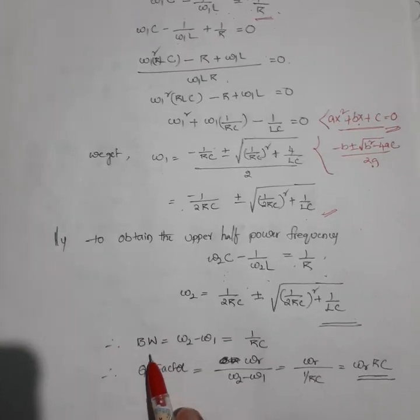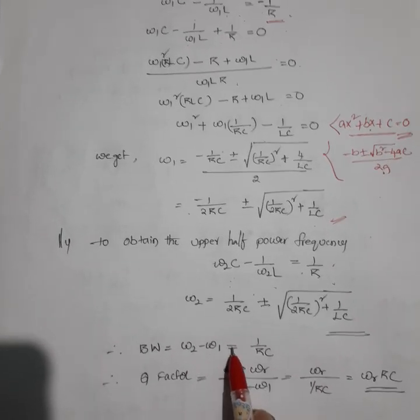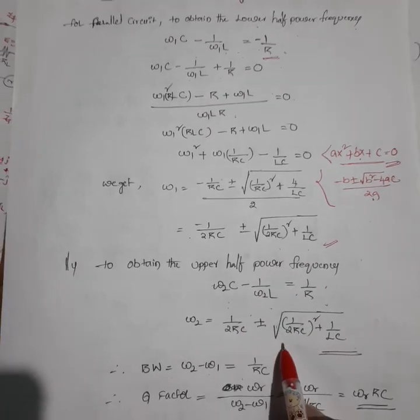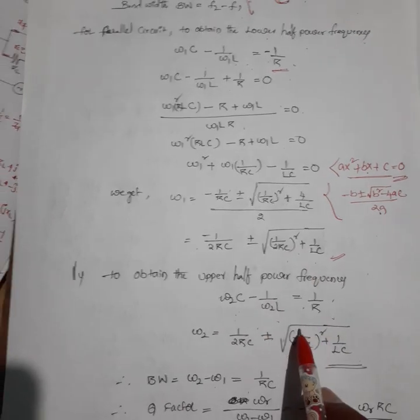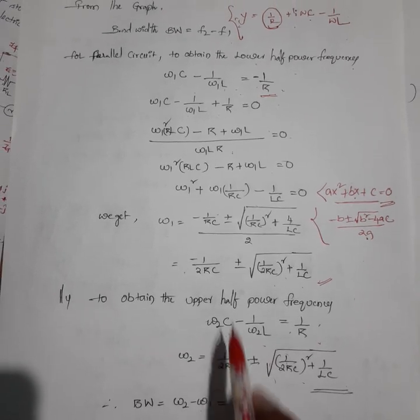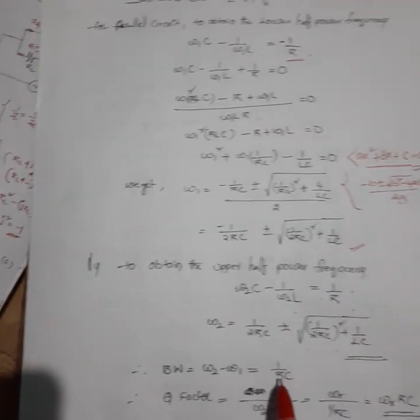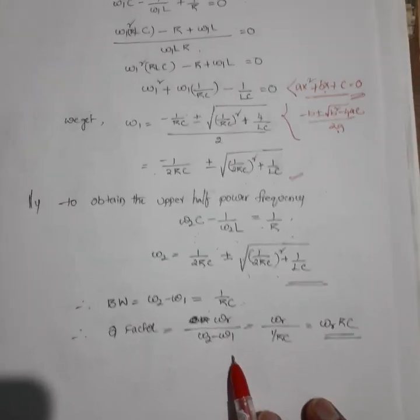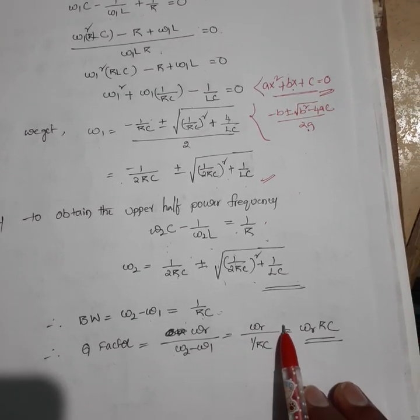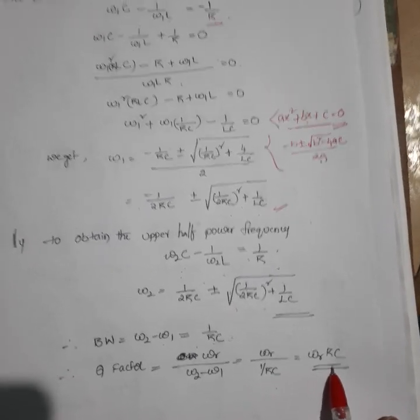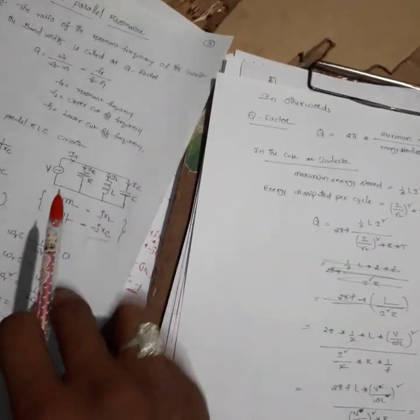The bandwidth is ω₂ − ω₁. When subtracting, the square root terms cancel and the two 1/(2RC) terms add, giving bandwidth = 1/(RC). Therefore, the quality factor Q = ω_R / (ω₂ − ω₁) = ω_R × RC, which is simply 1/(RC) for bandwidth — and Q = ω_R·R·C.